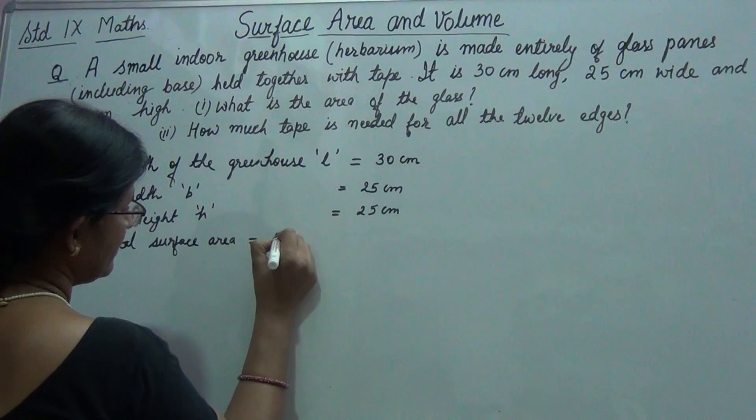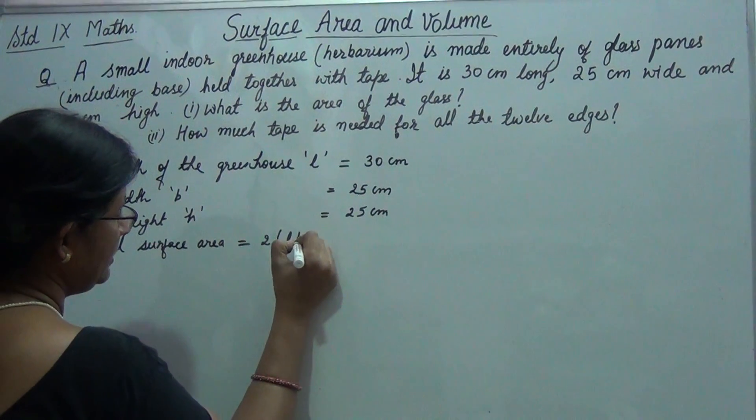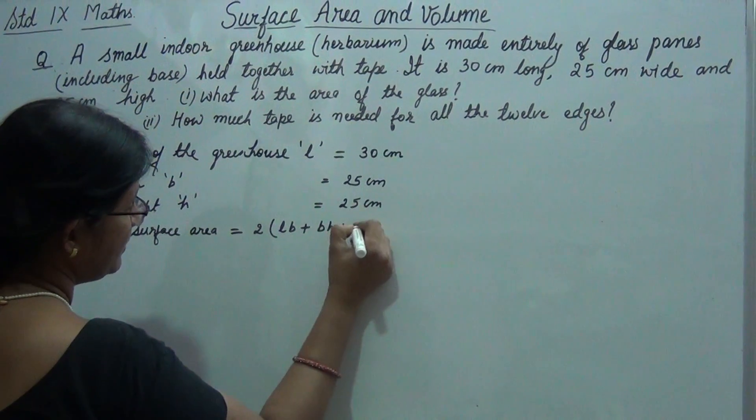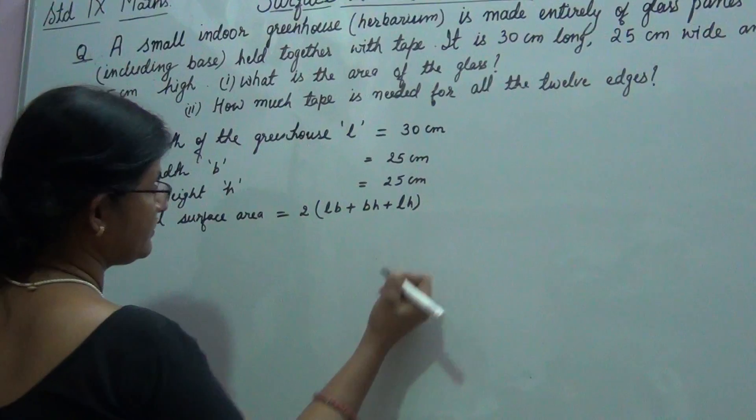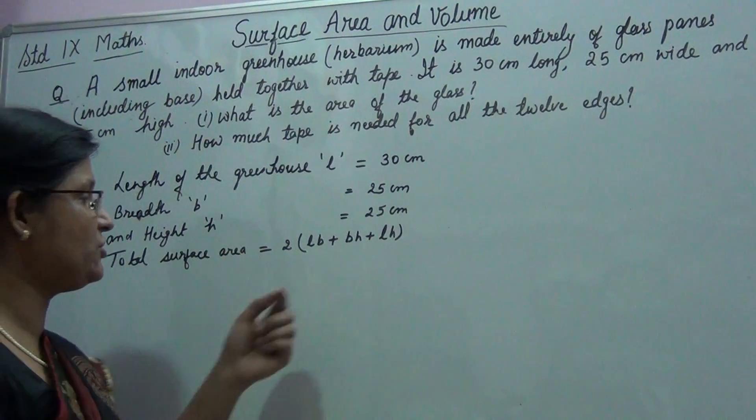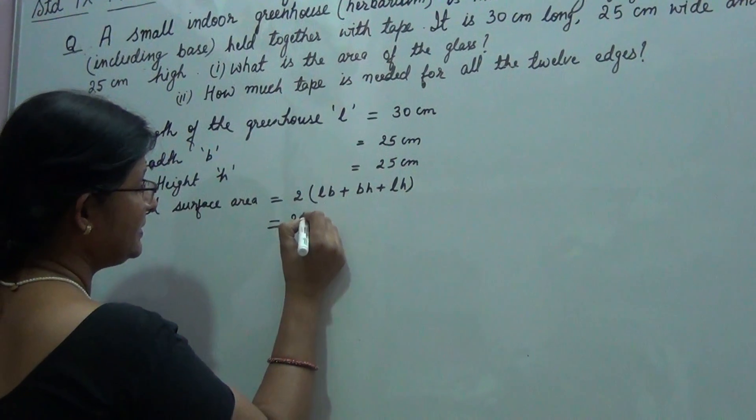Now total surface area is equal to 2 times L into B plus B into H plus L into H. Now we will substitute values of L, B and H here to get the total surface area.